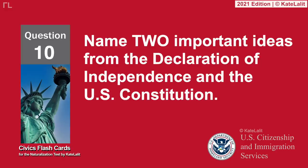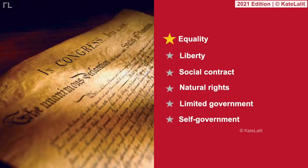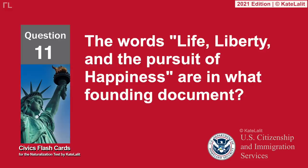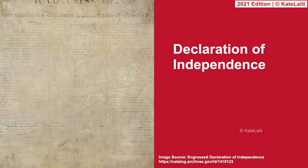Name two important ideas from the Declaration of Independence and the U.S. Constitution: Equality, Liberty, Social contract, Natural rights, Limited government, Self-government. The words "Life, Liberty, and the pursuit of happiness" are in what founding document? The Declaration of Independence.